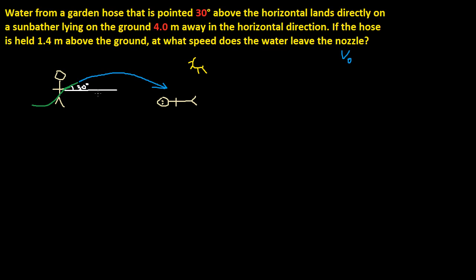What we have to consider is where it's going to end up. We have a set of equations we can use: X final minus X initial is equal to V0x times time, and Y final minus Y initial is equal to V0y times time...